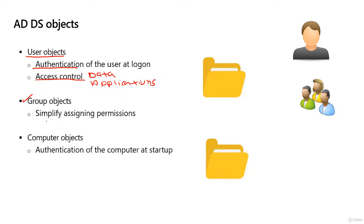If we move on to groups for a moment, groups simplify assigning permissions. These two things — access control and simplifying assigning permissions — truly go together.